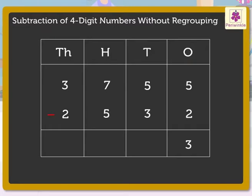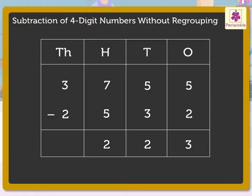Next, subtract the numbers in the tens column. That is, 3 from 5. We get 2, which we write in the tens column. Subtract the numbers in the hundreds column. That is, 5 from 7. We get 2, which we write in the hundreds column.